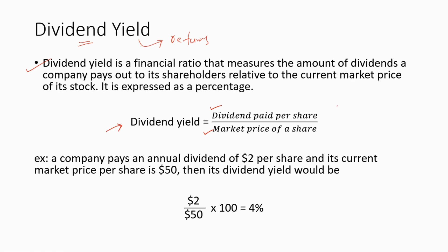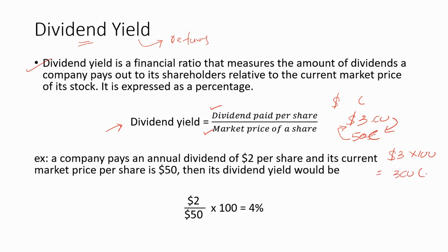If the question gives data in dollars and cents, you need to convert both values to one unit. For example, if you have a $3 value and a 50 cent value, you must either convert the dollar value into cents or the cents value into dollars. You can convert any currency into cents by multiplying by 100 — so $3 equals 300 cents. Alternatively, you can convert 50 cents into a dollar value by dividing by 100, giving 0.50 dollars.